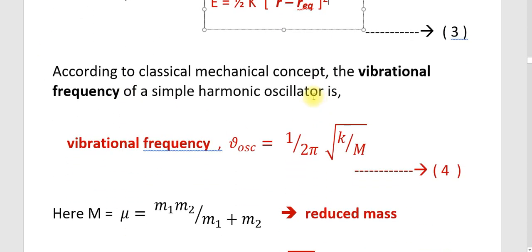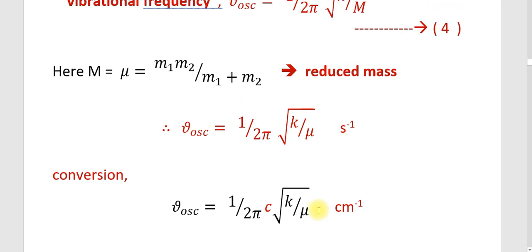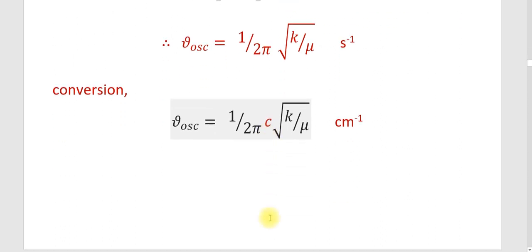According to classical mechanics, the vibrational frequency of a simple harmonic oscillator is ν_osc = (1/2π)√(k/μ) (equation 4), where μ is the reduced mass. The equation for reduced mass is μ = m₁m₂/(m₁ + m₂), as already discussed in rotational spectroscopy. Converting from inverse seconds to inverse centimeters: ν_osc = (1/2πc)√(k/μ) cm⁻¹.